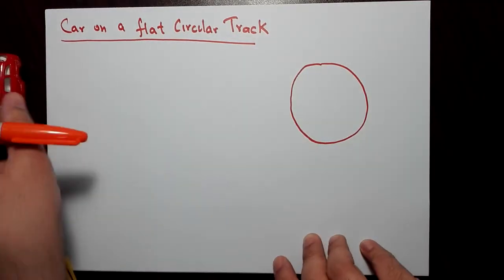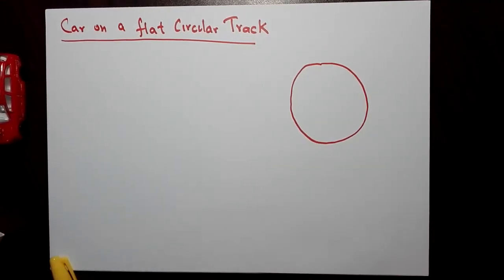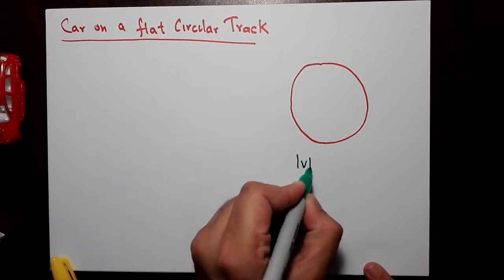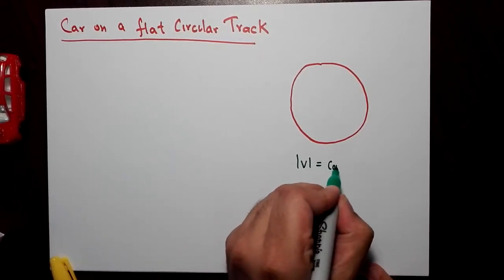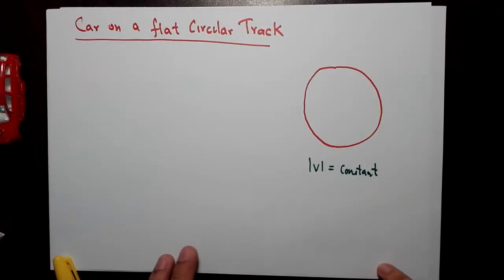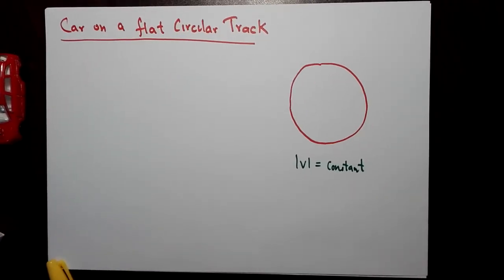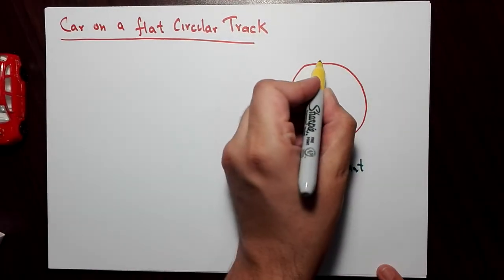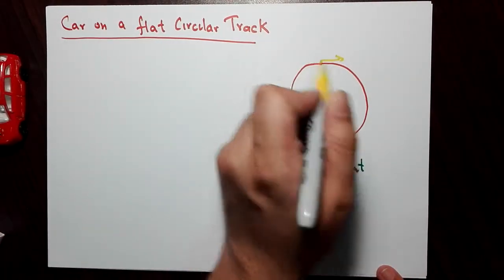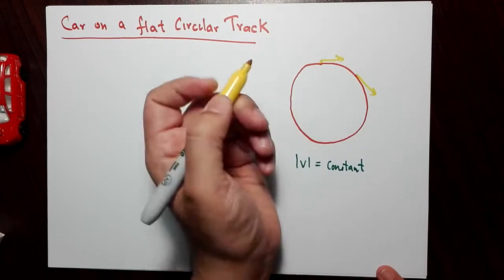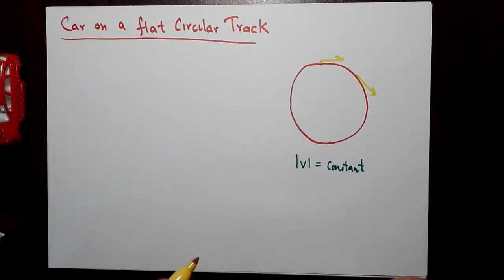Now we're going to assume that it's moving with constant speed. Magnitude of the speed, let's say it's constant, so it's uniform circular motion. The velocity, of course, changes direction. At every point, velocity changes direction, but its magnitude remains constant.